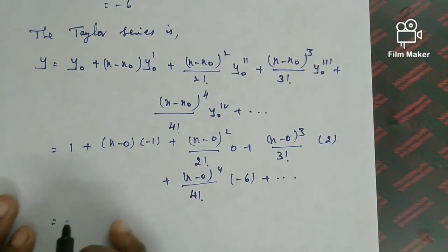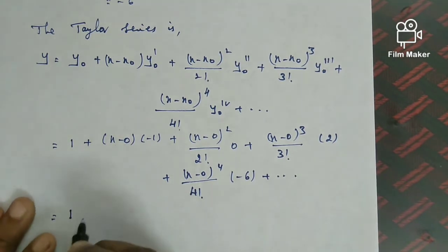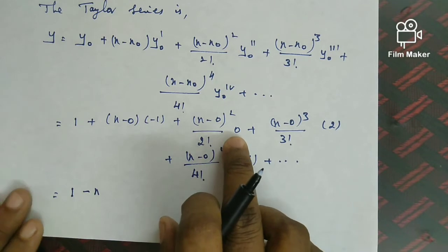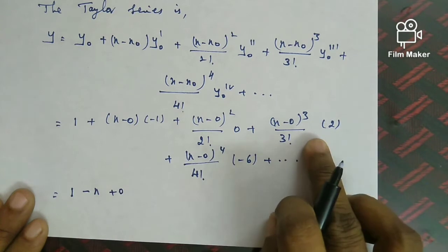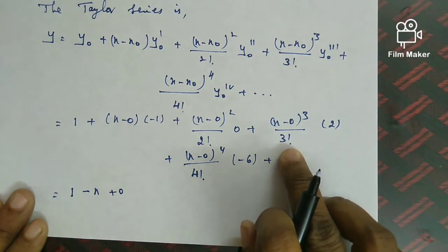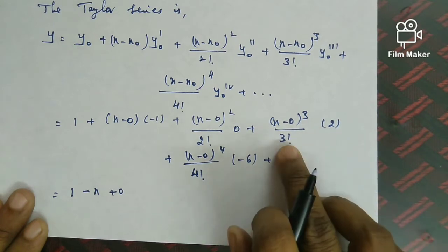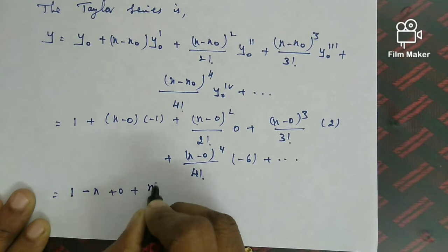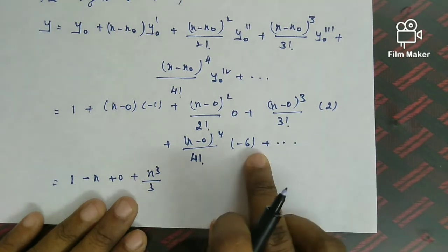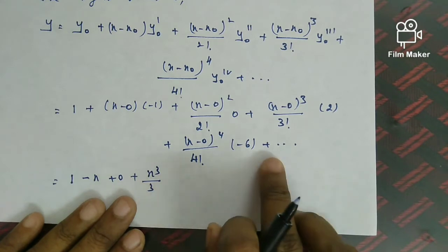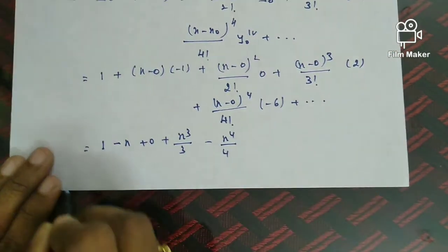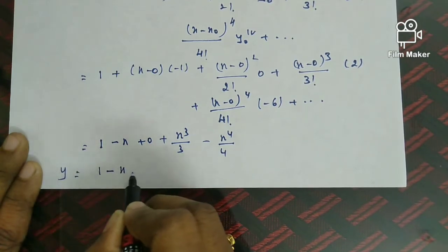Simplifying: 1 minus x, the x² term is zero (omitted), x³/6 times 2 gives x³/3, and x⁴/24 times minus 6 gives minus x⁴/4. So the required solution is y equal to 1 minus x plus x cubed by 3 minus x to the power 4 by 4.